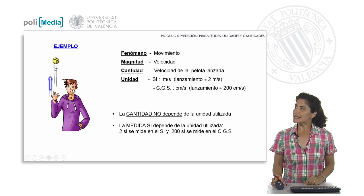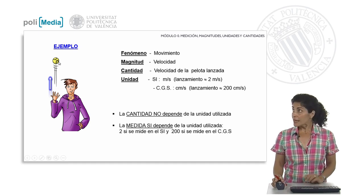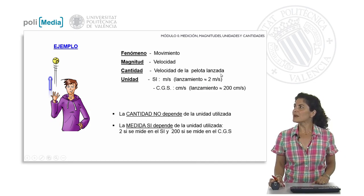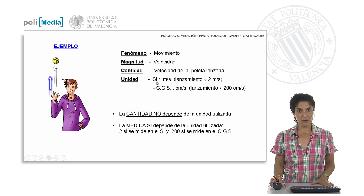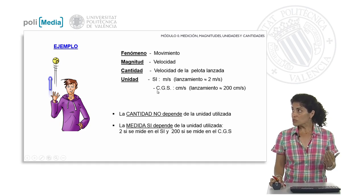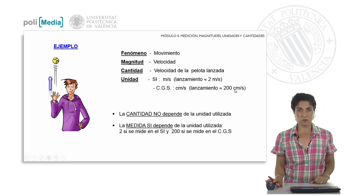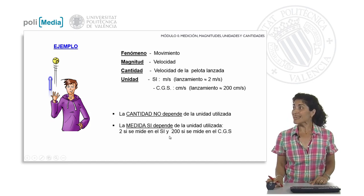Let's look at this example. In this case, we have J throwing a tennis ball upwards. We can observe the phenomenon: the movement of the ball. The magnitude we are going to analyze is velocity. The quantity we are going to work with is the velocity of the thrown ball. We can use the international system of units and give the velocity in meters per second, or use the CGS system where the units would be centimeters per second. In the international system, the velocity can be approximately 2 meters per second, or 200 centimeters per second in the CGS system. The quantity does not depend on the unit used; however, the measurement does depend on the unit — 2 in the international system and 200 in the CGS system.